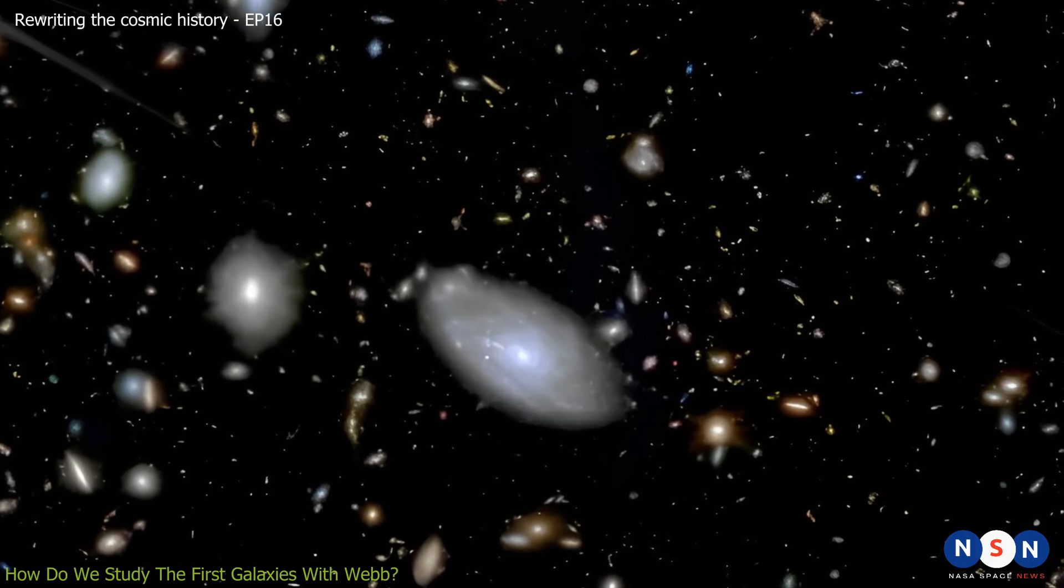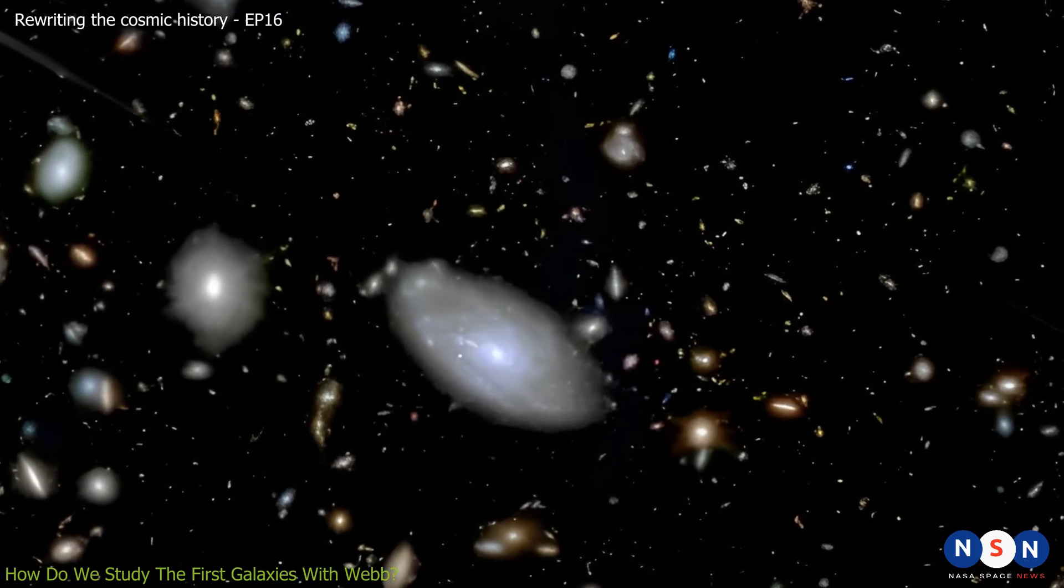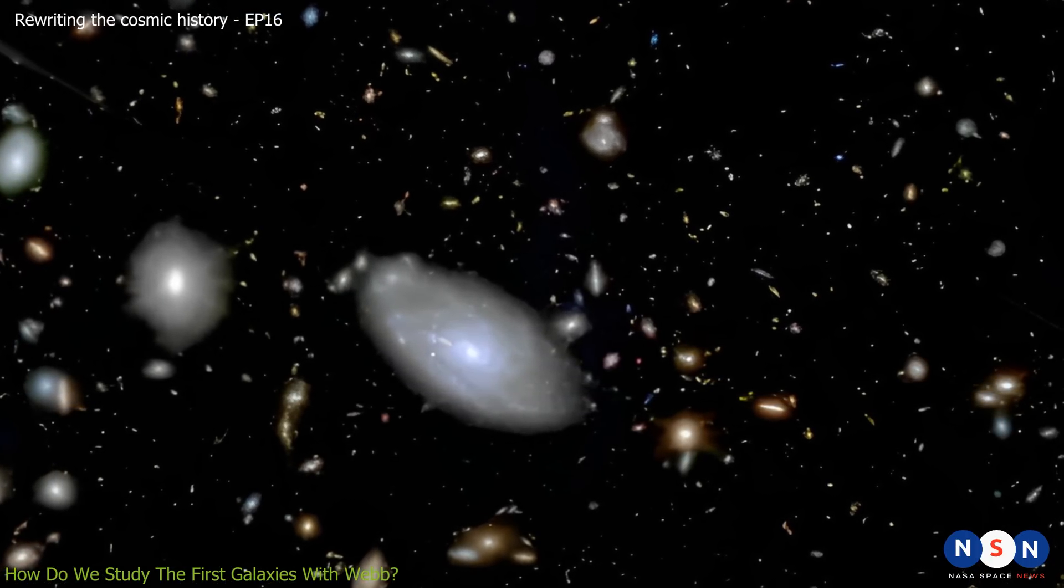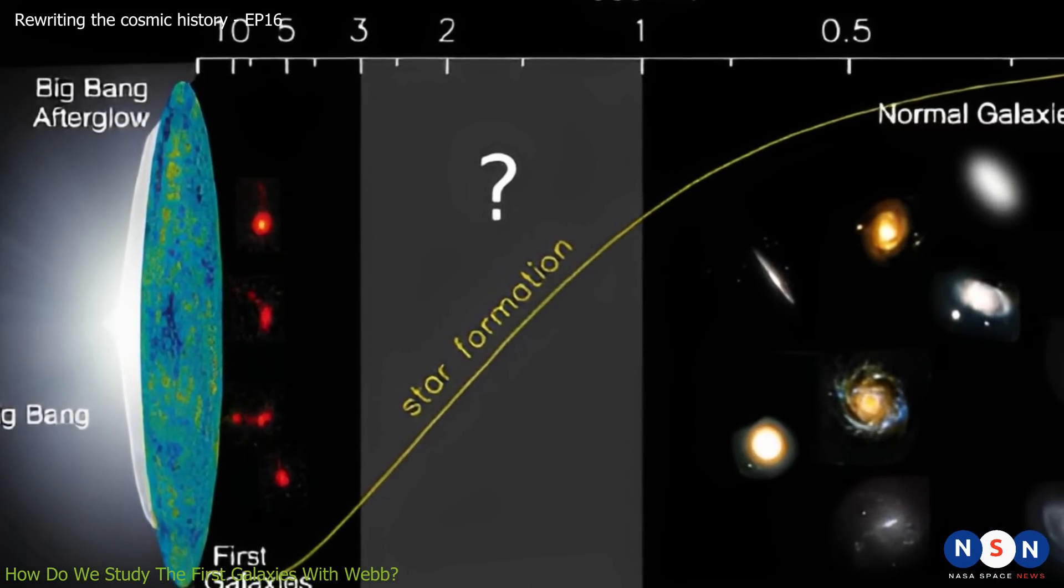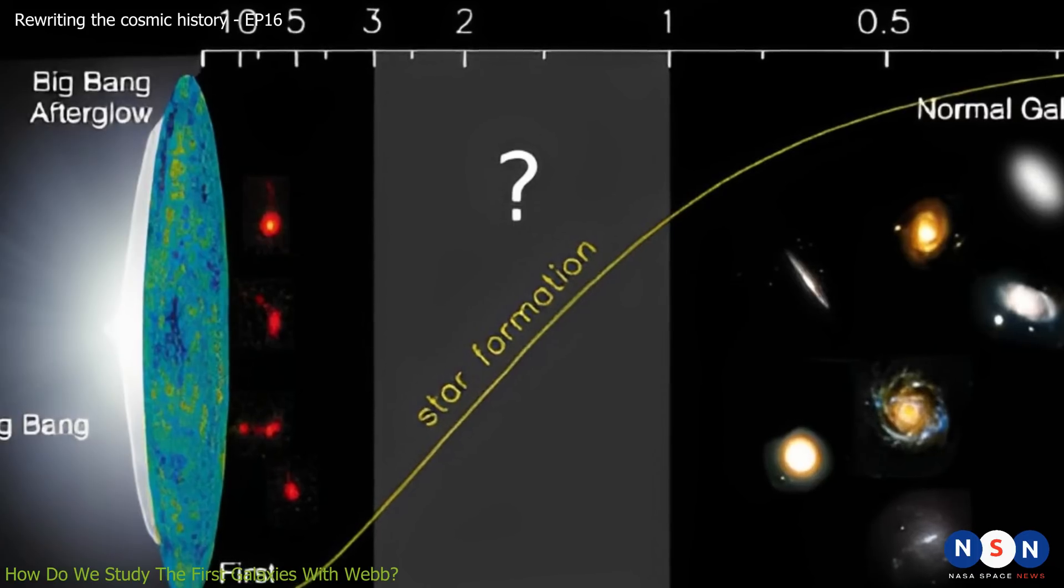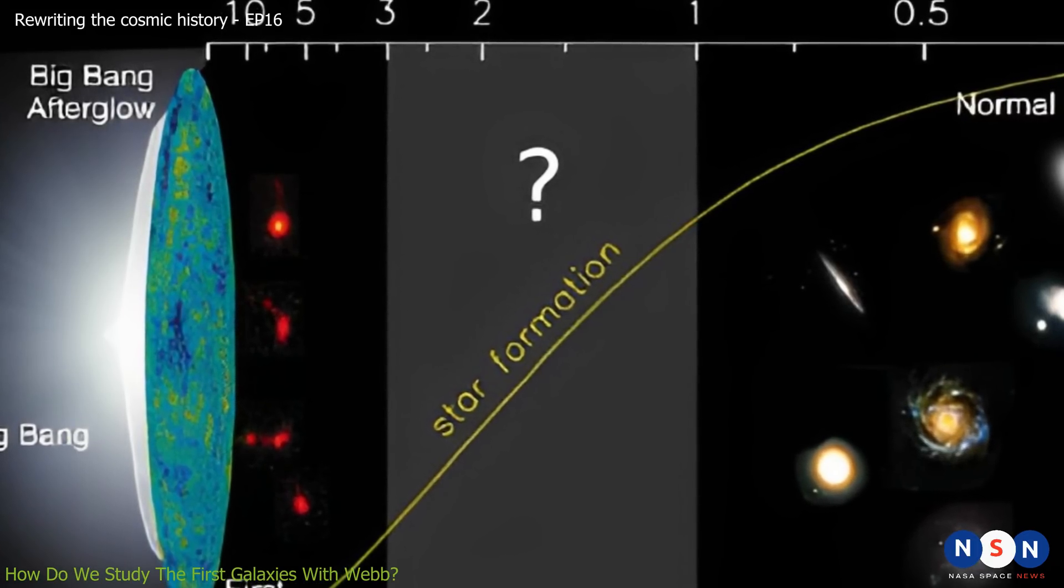The galaxies that Webb discovered have very high redshifts, ranging from Z=9 to Z=15. This means that their light has been stretched by a factor of 10 to 16, making them very faint and red in visible light, but bright and clear in infrared light.